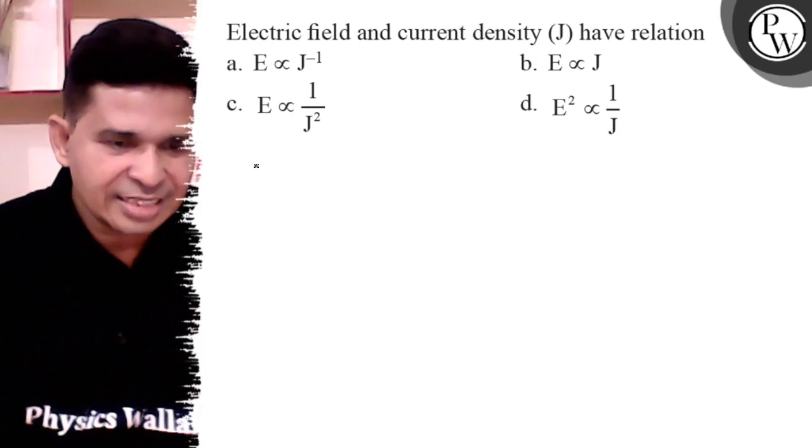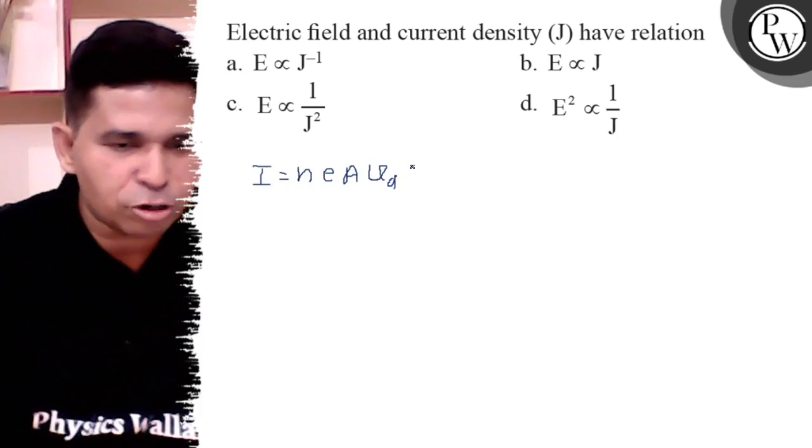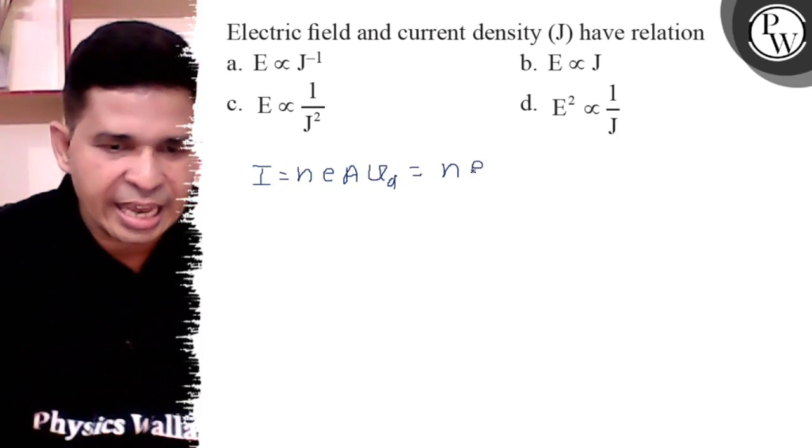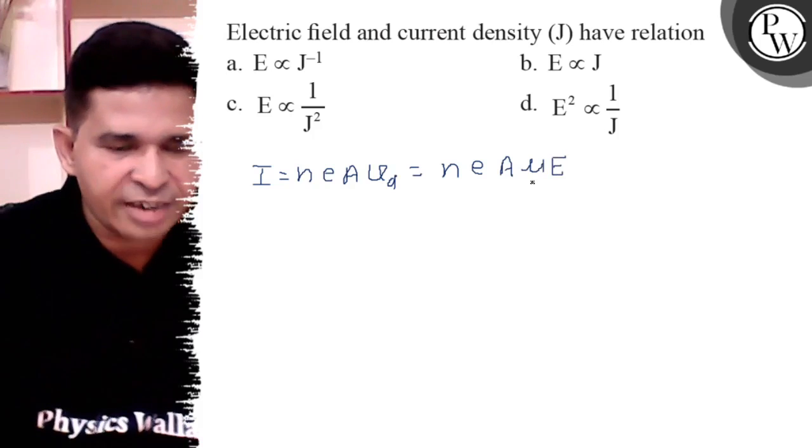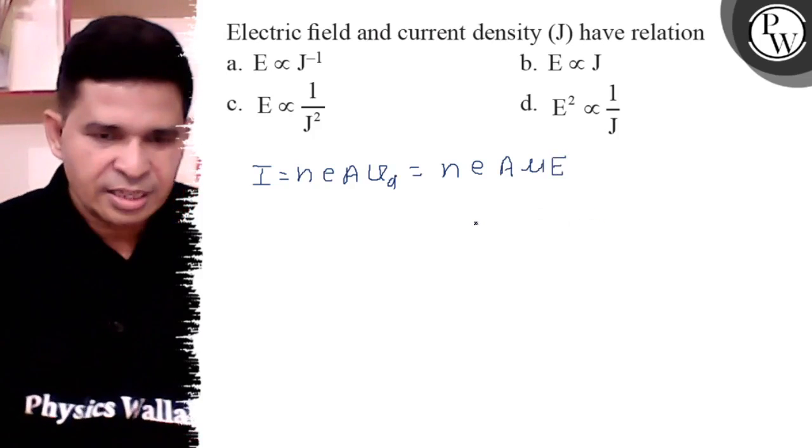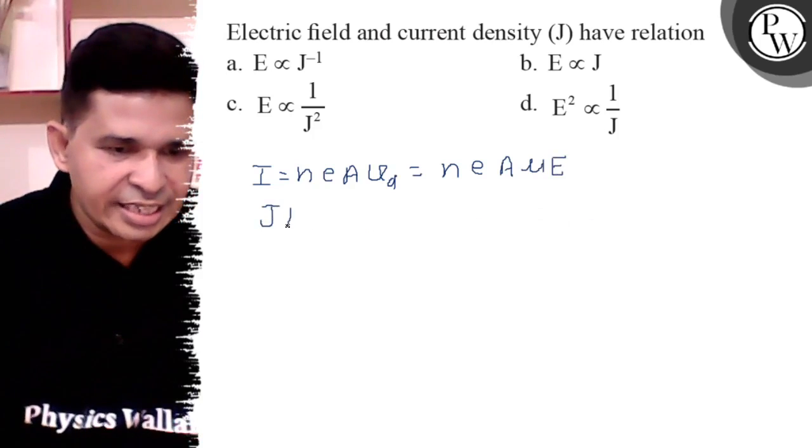We know that the current I is equal to n e A Vd, where Vd is the drift velocity. And Vd is mobility mu into electric field E. So what is the current? Current I is current density J into area A.